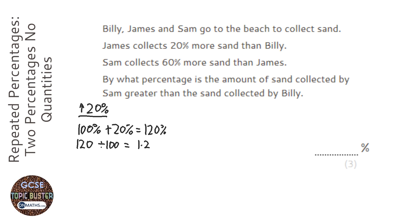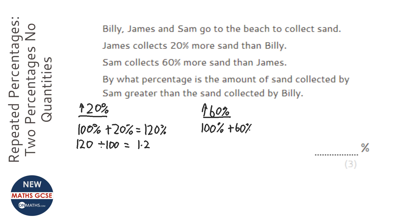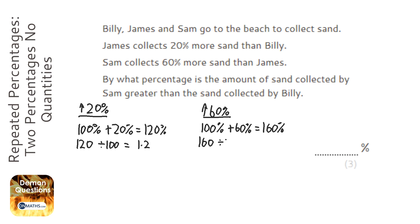So if I multiply something by 1.2, it'll increase by 20%. Next, I'm going to do the 60%: 100% plus 60% equals 160%. Making that a multiplier by dividing by 100 gives 1.6. So if I multiply something by 1.6, it will increase it by 60%.